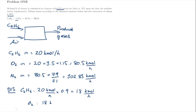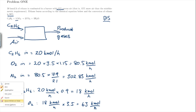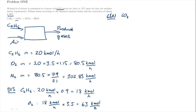The disappearance of oxygen is just the amount of ethane reacting multiplied by 3.5, which gives us 63 kilomoles per hour. The next terms required in our mass balance table are the generation terms. For CO₂, we have 18 kilomoles of ethane reacting and we produce 2 kilomoles of CO₂ for every kilomole of ethane, so the generation is 36 kilomoles per hour of CO₂.